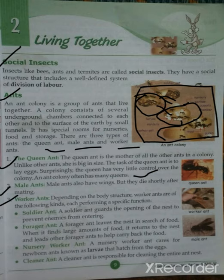The third type is worker ants. Depending on their body structure, worker ants perform specific functions. The first kind is soldier ants. Soldier ants guard the opening of the nest to prevent enemies from entering. They perform the duty of a guard, not allowing any enemy to enter the colony.